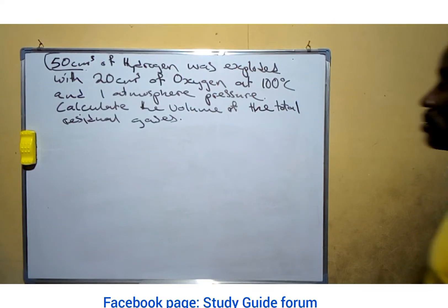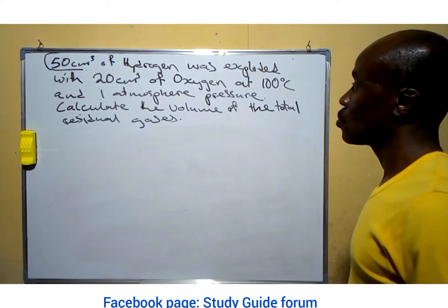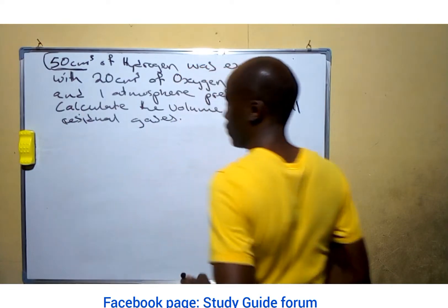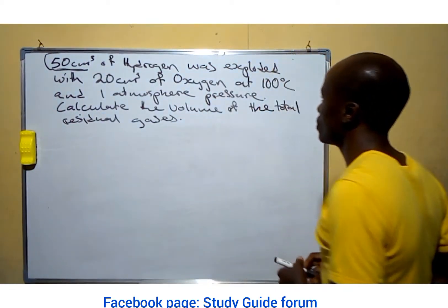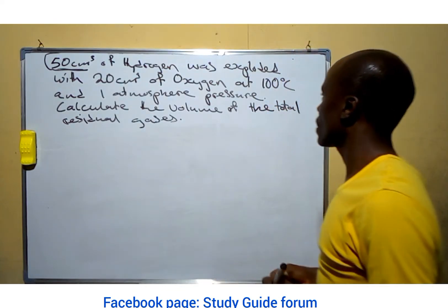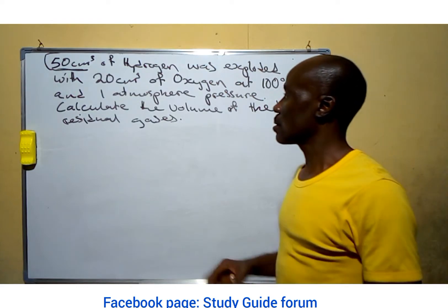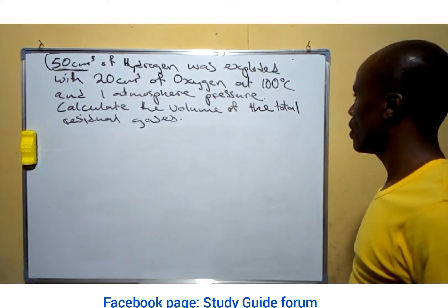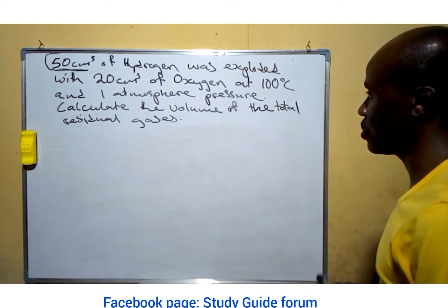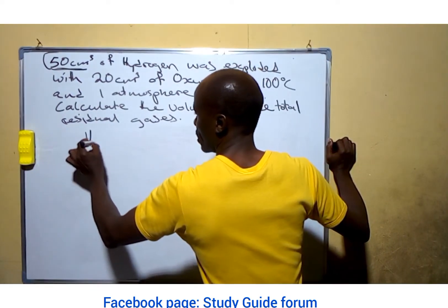Hello everyone, welcome to another exciting time in our class. So here we have a question that said 50 cm³ of hydrogen was exploded with 20 cm³ of oxygen at 100 degrees Celsius and one atmosphere pressure. Calculate the volume of the total residual gases.